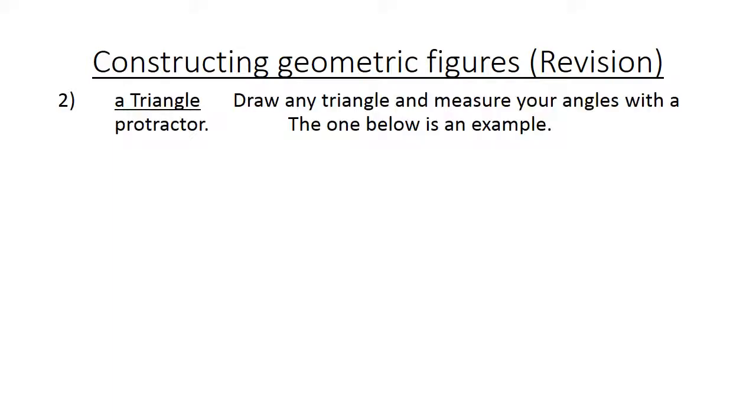A triangle: Draw any triangle and measure your angles with a protractor. The one below is an example. There we have triangle ABC. We have a right angle triangle, which means it's 90 degrees. The top angle BAC is 48 degrees, and angle BCA is 42 degrees.